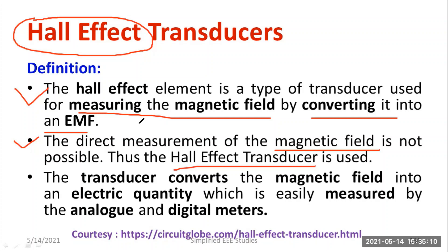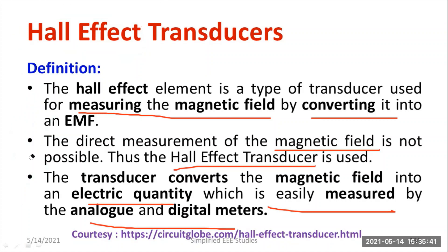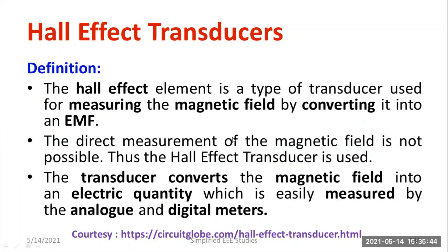Thereby, you can also measure other quantities. The transducer converts the magnetic field into an electrical quantity which is easily measured by either analog or digital meters. The magnetic field is measured in terms of EMF, and that EMF can be measured with the help of any digital or analog voltmeter.